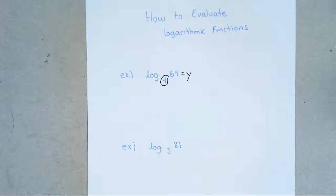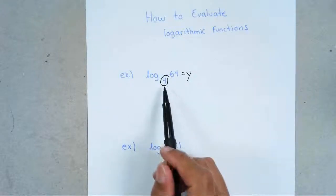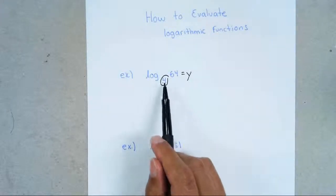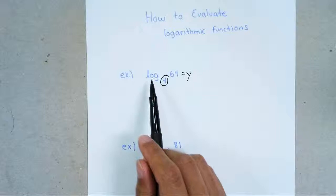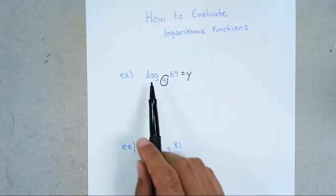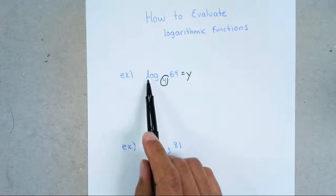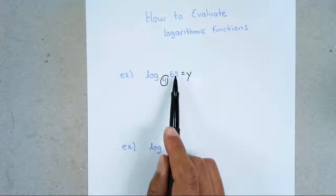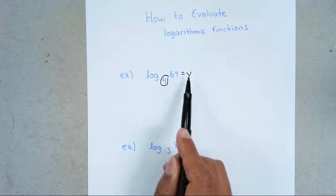Hi, everyone. In this video, we're going to discuss how to evaluate logarithmic functions. You're going to see I already circled the 4. That's important because this 4 is what we consider our base for a logarithmic function. How you read this is: log base 4 of 64 equals some number.